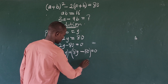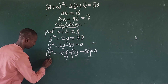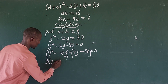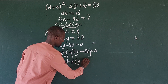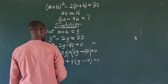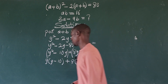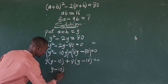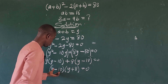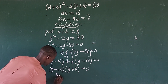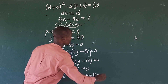Grouping in brackets and factoring: from the first group we take out y, leaving y minus 10; from the second group we take out 8, also leaving y minus 10. Since both brackets are the same, we get (y minus 10)(y plus 8) equals zero. Setting each factor to zero gives y minus 10 equals zero or y plus 8 equals zero.